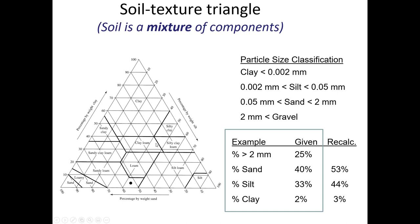I want to show you a soil texture triangle, which you may have seen in geotechnical engineering. Soil is a mixture of different components. Predominantly, soil can be thought of as comprising clay, silt, and sand. Clay has the smallest grain size, silt is larger, and sand is the largest, aside from gravel.